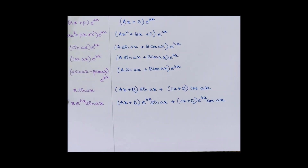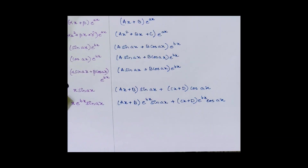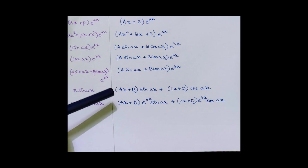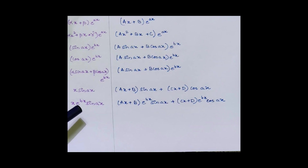For x·sin(ax), the format is (ax + b)·sin(ax) + (cx + d)·cos(ax), since the format for sin(ax) is a·sin(ax) + b·cos(ax), and for the polynomial factor x the constants combine. For x·e^(bx)·sin(ax), the corresponding trial solution format is applied similarly. Please remember all these formats as they are very important for this method.